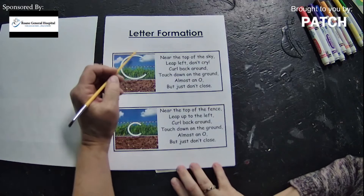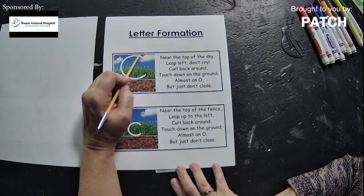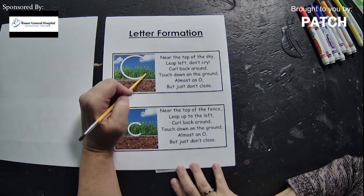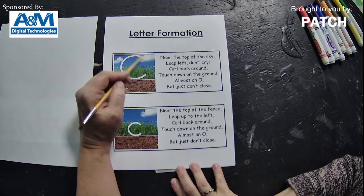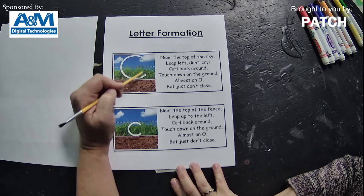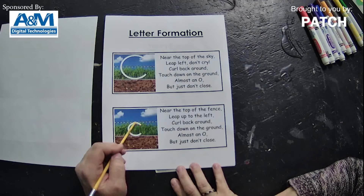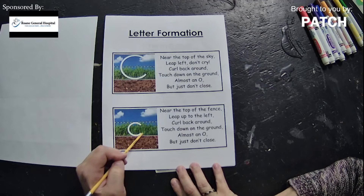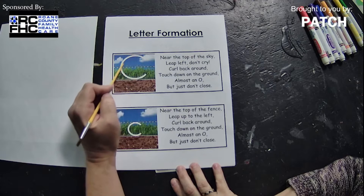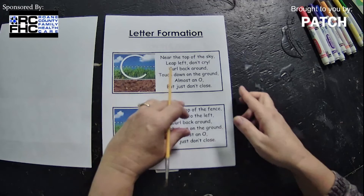We have our little formation poem: near the top of the sky — if you can see it right there, we're kind of in the clouds — near the top of the sky, leap left, don't cry, curl back around, touch down on the ground, almost an O but just don't close. For the lowercase C: near the top of the fence, leap up to the left, curl back around, touch down on the ground, almost an O but just don't close. Just one line — around, down, and back up, don't close our fence.